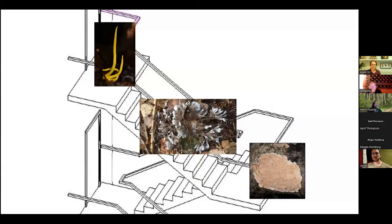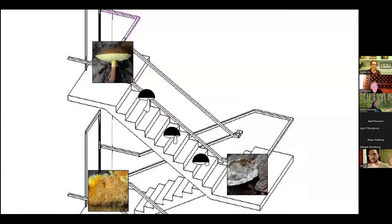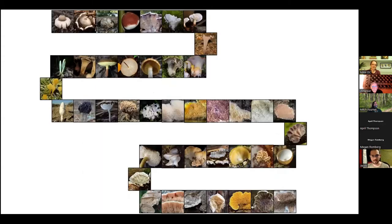The way I think about it is those basic forms are like landings on a staircase where mushrooms are especially comfortable forming those things, or at least we're especially comfortable sorting them into those categories. And then mushrooms can step briefly along the steps anywhere in between them. You can imagine the same thing happening between a classic bolete and polypore shape — there are mushrooms that have smaller and smaller stems that are more and more eccentric, and you can have any intermediate you want in between.